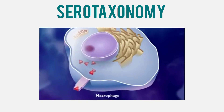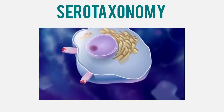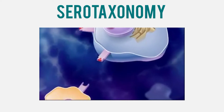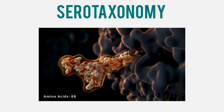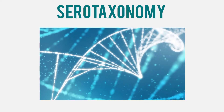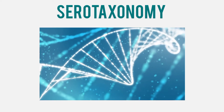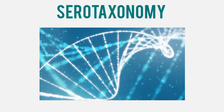Antibody is a highly specific protein molecule produced by the immune system. The particular antibody will only fight with a particular antigen — that is specificity. If you look at protein, taxonomical information will be passed from one generation to another. The antigen-antibody reaction is used in serotaxonomy.